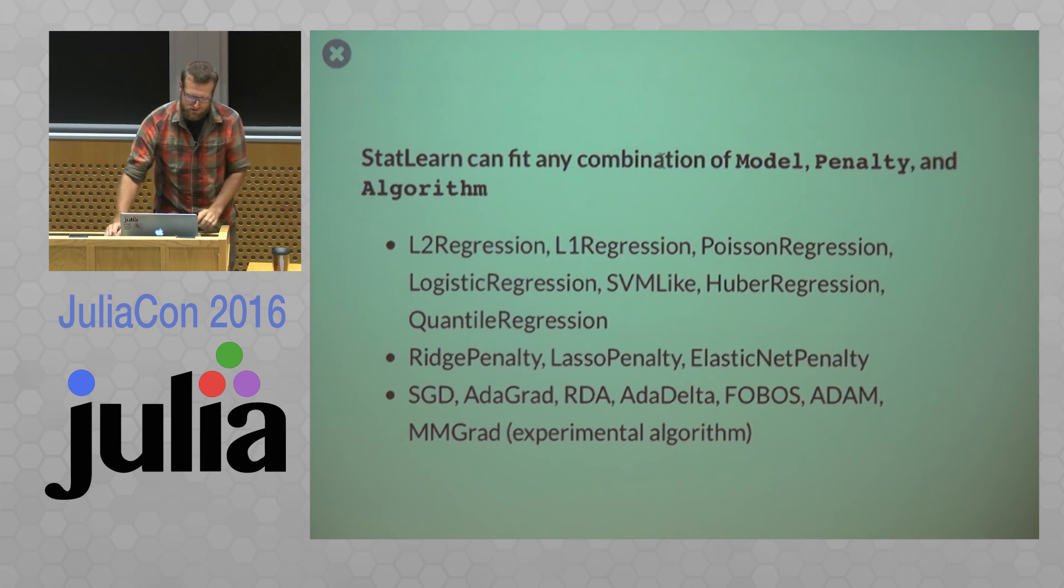So this is linear regression, absolute loss, Poisson logistic regression, support vector machines, Huber loss quantile regressions with ridge lasso or elastic net penalties, and using any variety of these algorithms here. So MMGrad is an experimental algorithm that I'm working on for my research, but all these other ones are also implemented in there.